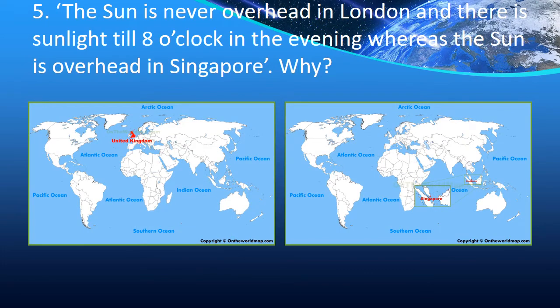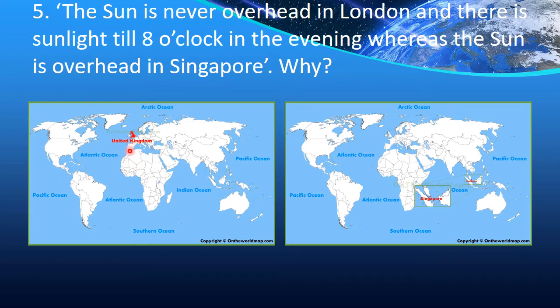Question 5: The sun is never overhead in London and there is sunlight till 8 o'clock in the evening, whereas the sun is overhead in Singapore. Why? This is a tricky question which tests the understanding of all the concepts. London is in the United Kingdom — it lies not near the equator or near the Tropic of Cancer, but between the Tropic of Cancer and the Arctic Circle. Singapore is near the equator.